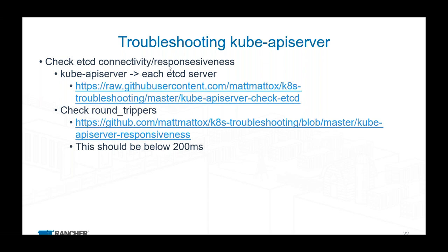The other big one is storage vMotion. I've seen where if an API server suddenly gets moved by VMware, that round-trip time will skyrocket and start timing out, causing the API server to freak out because it can't get to any of the etcd nodes. So it can cause those kinds of weird issues in your environment.